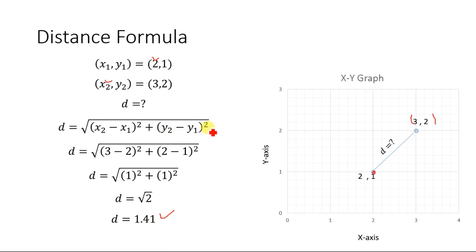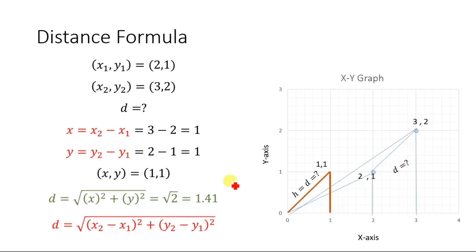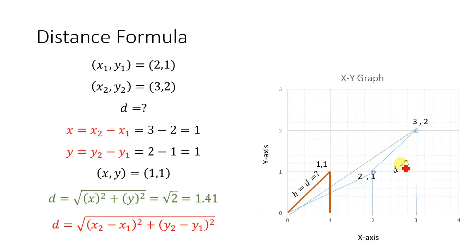Now let's derive this equation. For the derivation, let's consider the same two points. The first point is (2, 1), where 2 is x1 and 1 is the y component. This point makes a right angle triangle. Similarly, (3, 2) represents the bigger triangle.